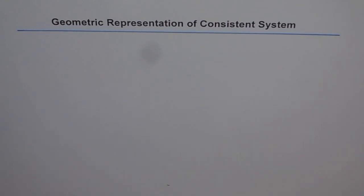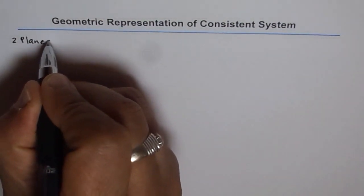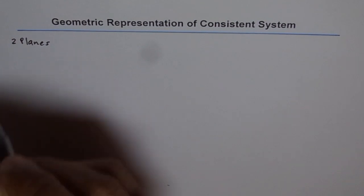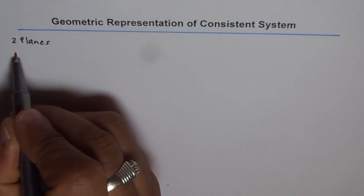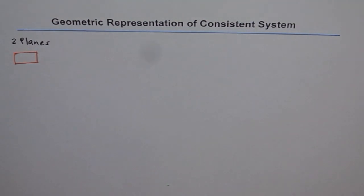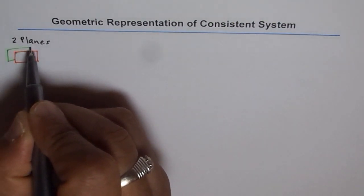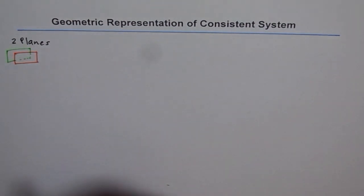If we have two planes, let's consider first the case where we have two planes represented by two different linear equations. In that case, there are two possibilities. The two planes could be parallel. If the two planes are parallel — this is one plane and the other plane is like this — they will not intersect. So that becomes inconsistent.